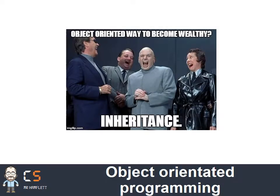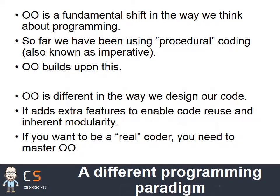One of the key differences between AS and A2 programming is object-oriented programming. Because of the amount of information and practical work involved, this will be split into a number of small chunks. Object-oriented programming is a fundamental shift in the way we think about programming. So far you've been using procedures, and OOP builds upon this idea. It's fundamentally a different way of designing your code - it allows extra features, enables code reuse, and is inherently modular. If you have any aspirations of coding for a career, you need to really get your head around how object-oriented programming and design works.